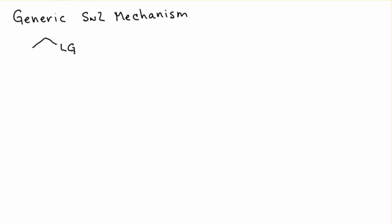For an SN2 mechanism you usually have either a primary or secondary carbon atom attached to a good leaving group. That's why it's generic, I'm just talking about it in terms of a leaving group.